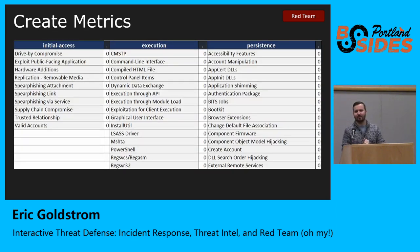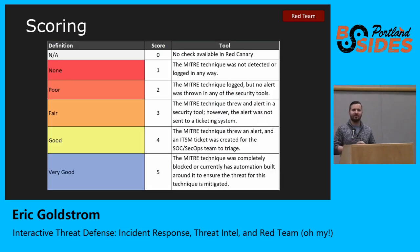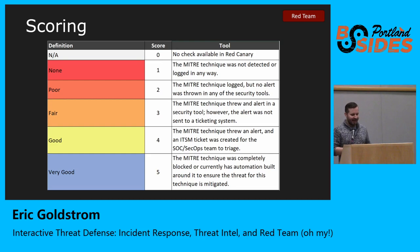Here's a quick look at what that metric spreadsheet looks like — the first three phases of MITRE ATT&CK: initial access, execution, and persistence. There's a scoring column next to each that develops into a heat map. The scoring system: 1 — not logged or detected in any way; 2 — logged but no alert thrown; 3 — alert thrown but not triaged by any team; 4 — alert sent to a ticketing system like Jira, Remedy, or ServiceNow for triage; 5 — technique was fully blocked or mitigated, possibly via SOAR automation.